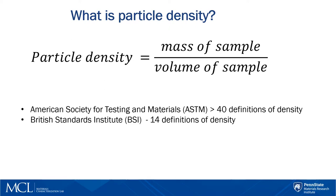So what is density? We were taught that it's simply the mass of an object divided by its volume. This is an easy definition. However, the American Society for Testing and Materials book has more than 40 definitions of density, and the British Standards Institute gives 14 types of densities.